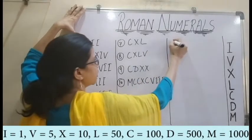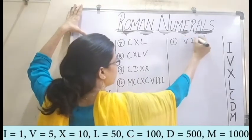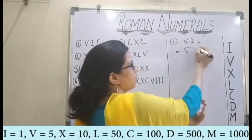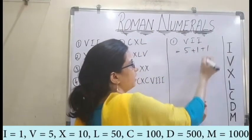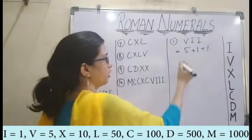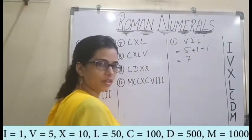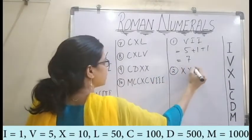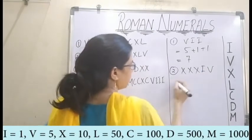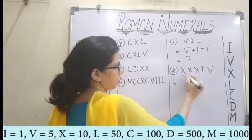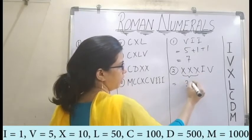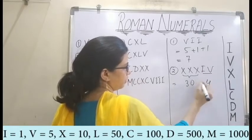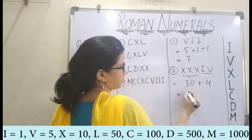The first one is VIII. As we know, V stands for 5, and I stands for 1. Since I is written after V, we add the values and get 7. Similarly, for the second one, I have XXXIV. XXX will stand for 30, and IV will stand for 4. We add and get 34.